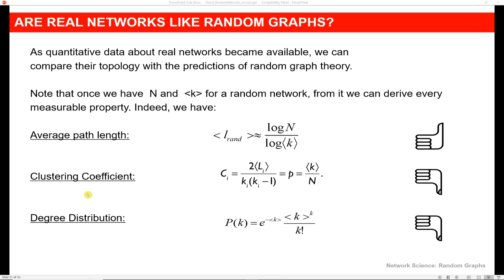When we talk about clustering, so how clustered people are, how connected they are, in random networks, we find that we have a low clustering coefficient. And in real networks, we tend to have a higher clustering coefficient.